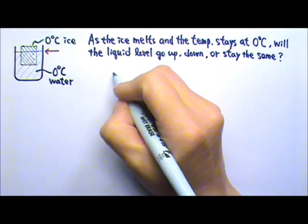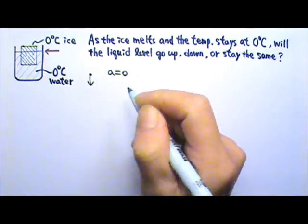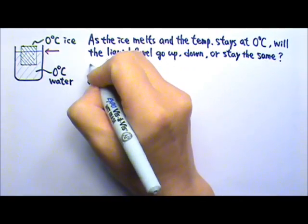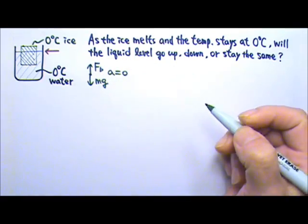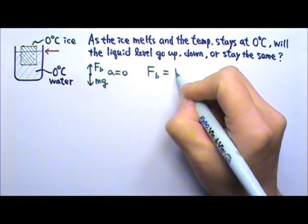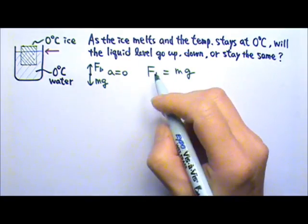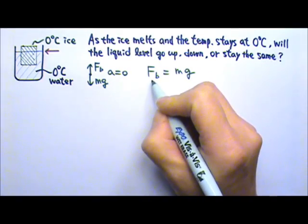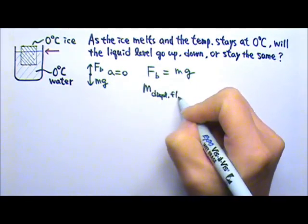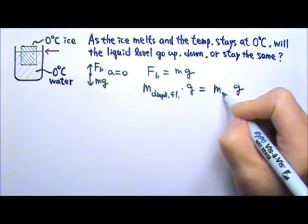The block of ice stays at rest, so the acceleration is 0. If you draw the force diagram for the ice, you would have mg of the ice going down and the buoyant force from the water going up. Because acceleration is 0, the upward force equals the downward force. According to Archimedes' principle, the buoyant force is the weight of the displaced fluid — so the mass of the displaced fluid times g equals the mg of the ice.